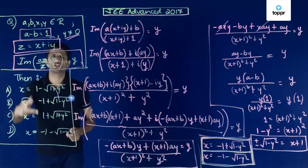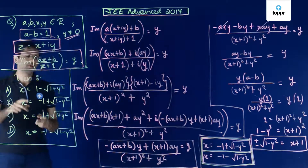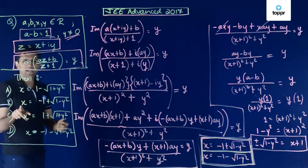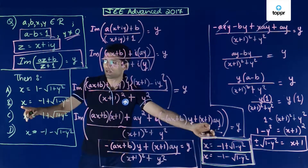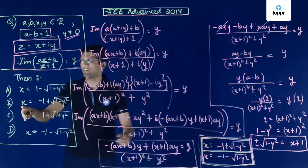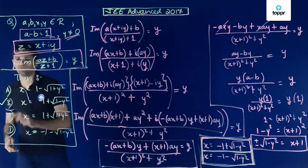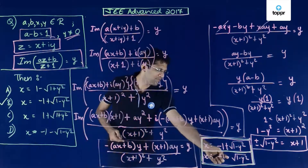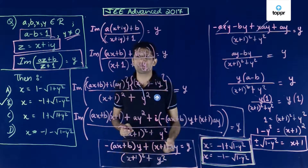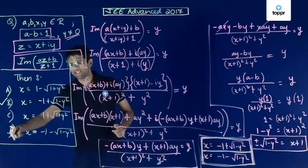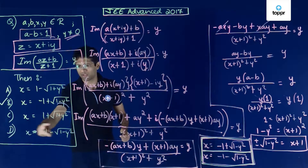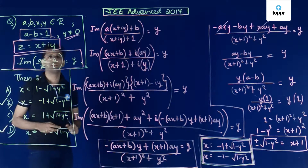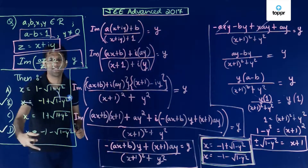Looking at the answer choices, the value x equals minus 1 plus root(1 minus y squared) matches option B, and x equals minus 1 minus root(1 minus y squared) matches option D. Therefore, both options B and D are the correct answers to this question.